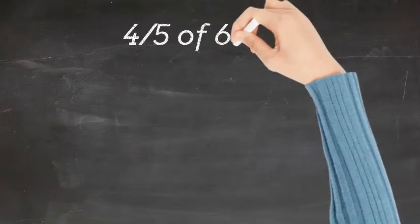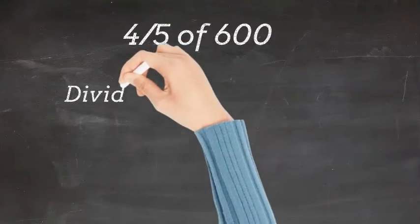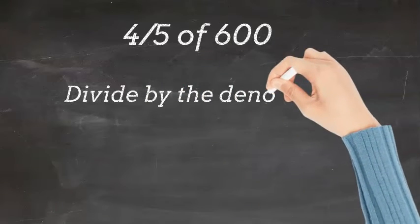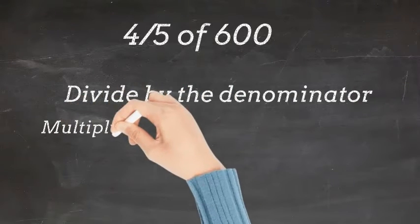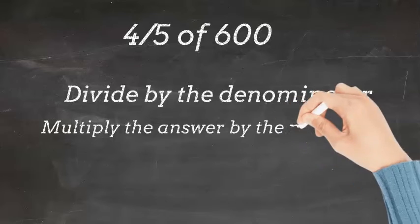Now let's work out 4 fifths of 600. So first we will divide by the denominator, then multiply our answer by the numerator.